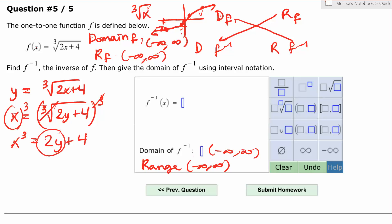Now I want to get y by itself, so I'm going to subtract 4 to the left-hand side. So x cubed minus 4 equals 2y. Lastly, divide by 2. x cubed minus 4, all divided by 2, equals y. Since the original function is f, this is f inverse of x. So f inverse of x is x cubed minus 4 divided by 2.